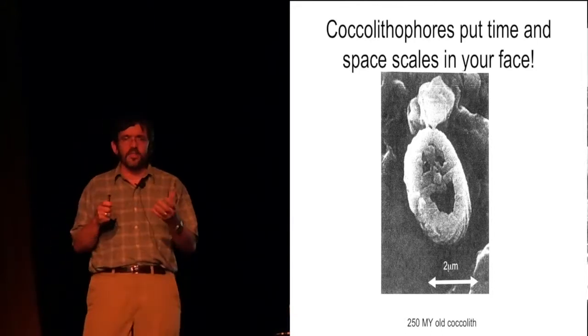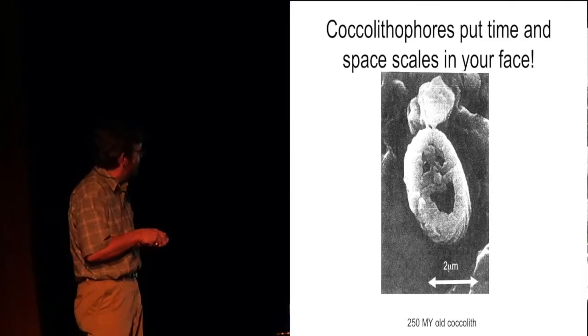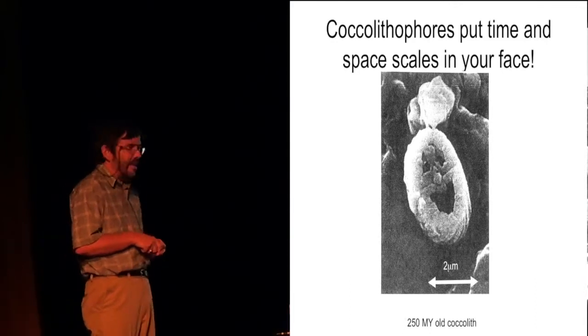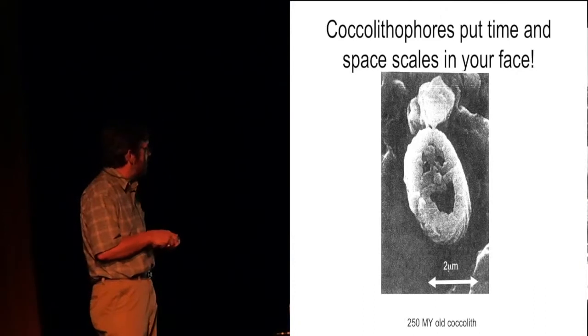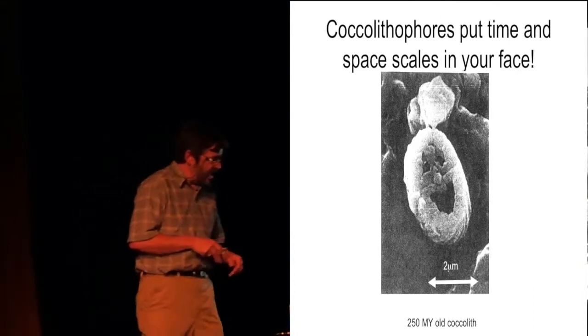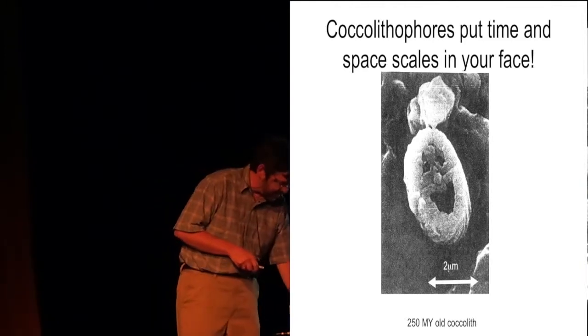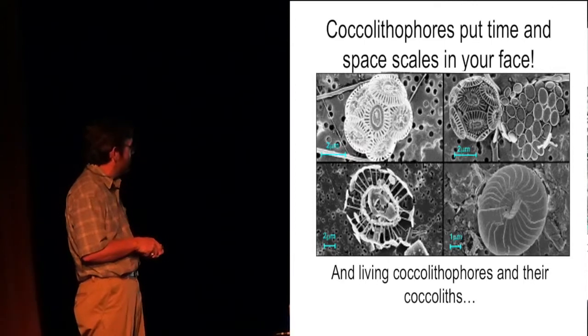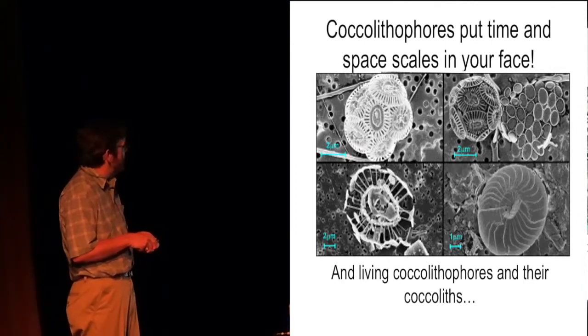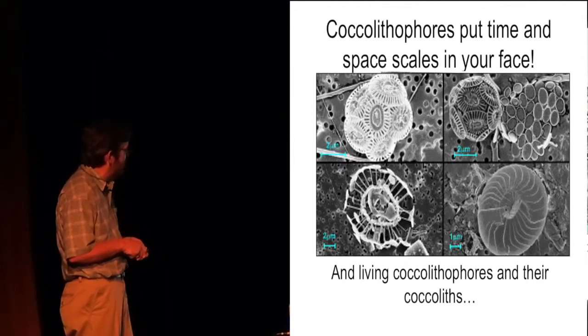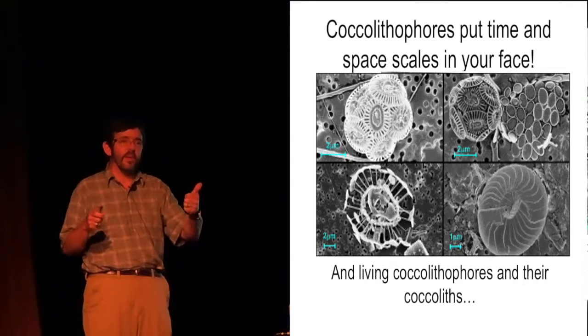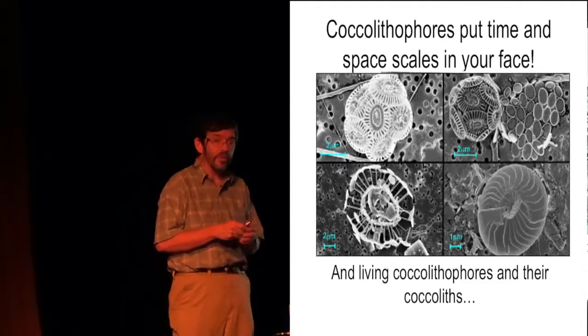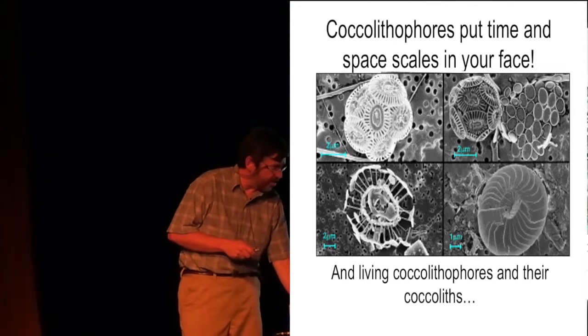So coccolithophores, these are plankton that calcify. They produce little tiny scales. And this is an image of a coccolith. It's a scale that's two millionths of a meter in diameter. But this one is 250 million years old. So this came out of the sediments. And you're looking at it from a scanning electron micrograph. And of course we were attracted to this because of the smiley face. But here are some views of living coccolithophores that we're studying now. Look at these beautiful trumpet shapes here. And there are all sorts of questions about why they make these plates. What's the future of these organisms in an acidifying ocean where the ocean is getting more acid and they're having a harder time calcifying.